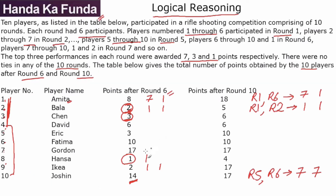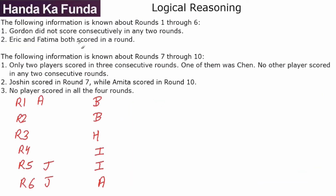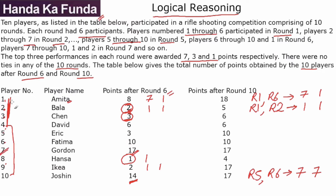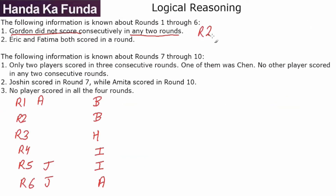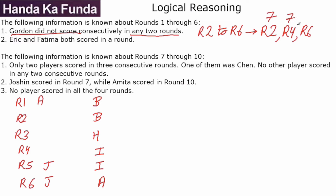Gordon has a score of 17, and we are told Gordon did not score consecutively in any two rounds. Gordon is player number 7, so he was only present from round 2 to round 6. Since he scored in alternative rounds, he must have scored in round 2, round 4 and round 6. In 3 rounds he scored 17 — the only way is 7, 7 and 3. He cannot get 7 in round 6 because Joshin is already there, so Gordon scored 3 in round 6 and 7 in rounds 2 and 4.